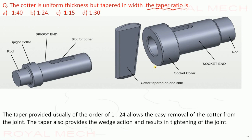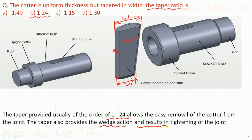When assembled as a cotter joint, the cotter is uniform in thickness throughout its length but tapers on its width — the width is bigger at one end and smaller at the other end. The taper ratio 1 to 24 is the standard. The taper allows easy removal from the joint, provides wedge action, and results in tightening of the joint.